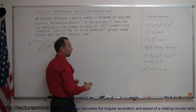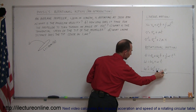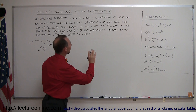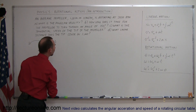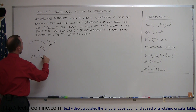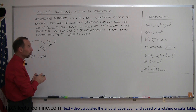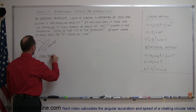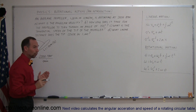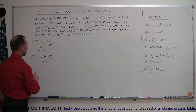Rotational motion is described by angular distance, angular velocity, and angular acceleration alpha. In this case we're talking about rotational velocity, so we'll write omega. It's equal to 2,000, and RPMs means revolutions per minute — that is revolutions per one minute. The standard units for omega, for angular velocity, is radians per second. So we'll have to convert from revolutions to radians and from minutes to seconds.